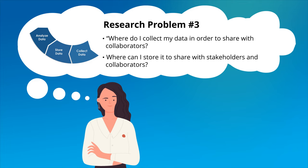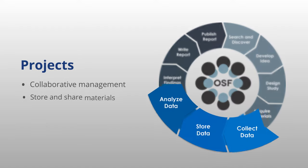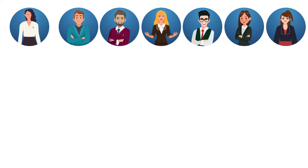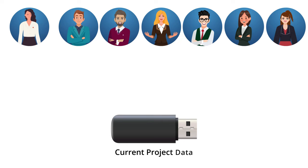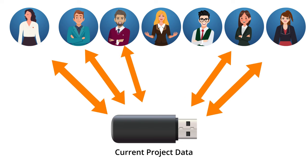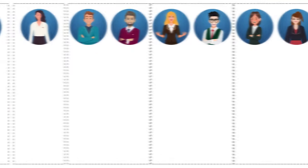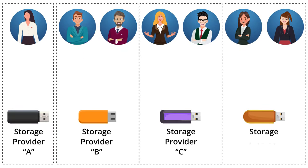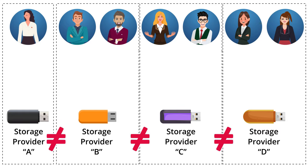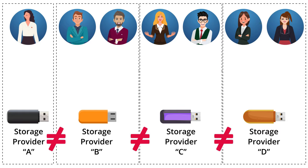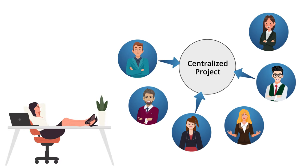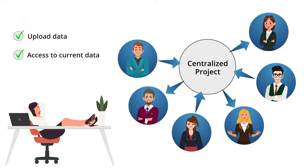Sophia has explored the landscape within her field, come up with a great research idea, and registered it on the OSF. She has been working with a few of her colleagues throughout the process, but in the past she's had problems with collaborations outside her institution. There always seem to be difficulties associated with access to the study's current data and changes to methods or protocols. Research institutions often provide different storage options to their researchers, making it difficult to collect all of the data from different collaborators in one place. She envisions setting up a hub where she and her collaborators and any other research lab partners can easily upload and share the data generated during the study.